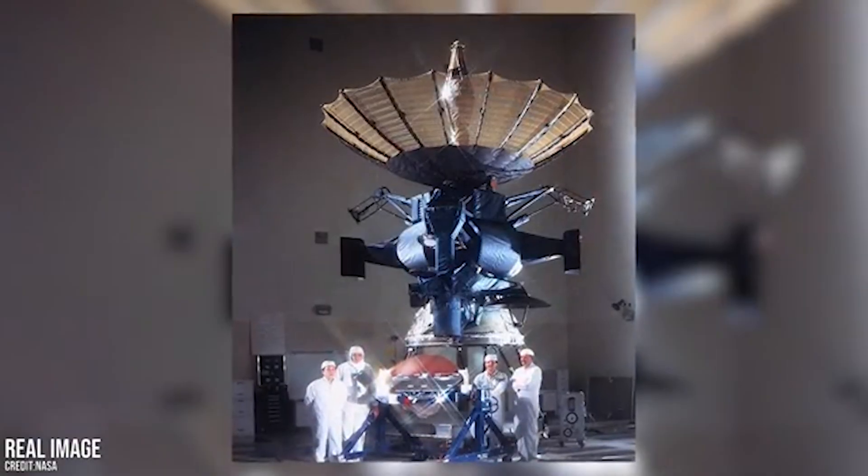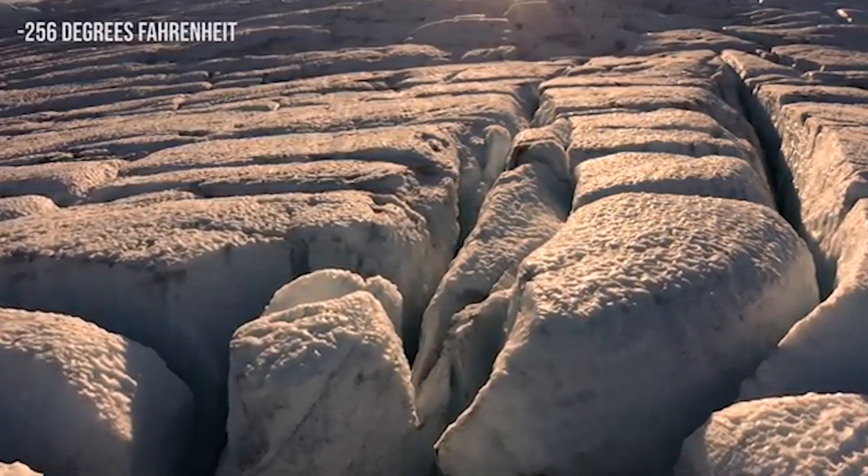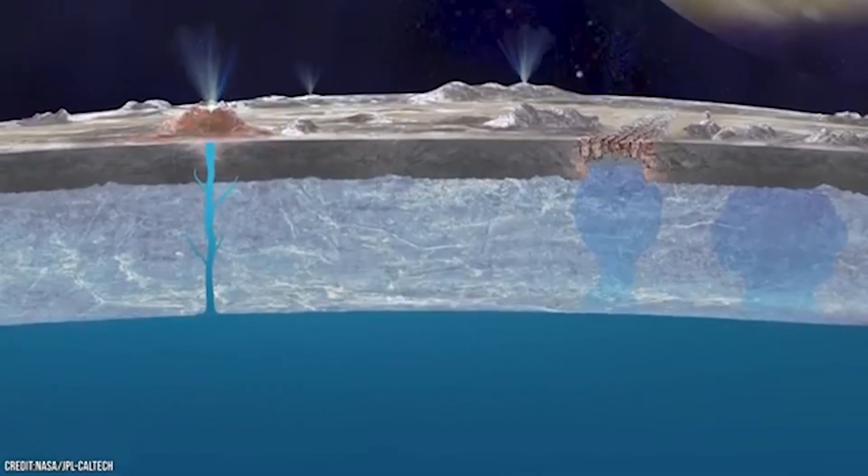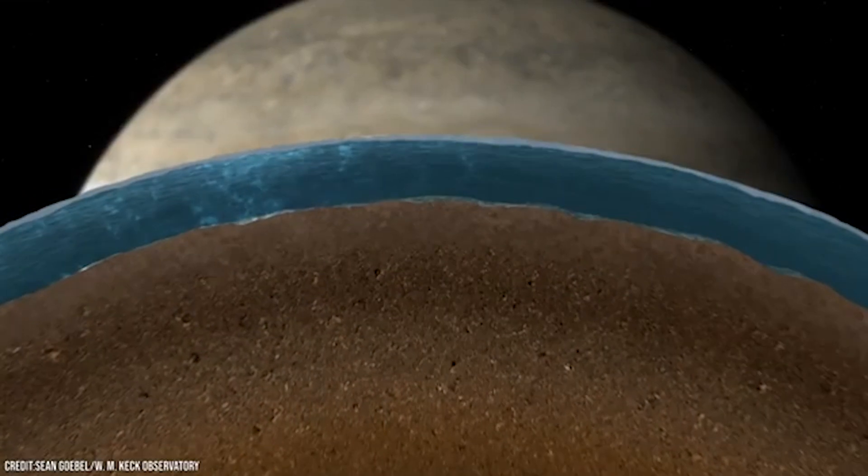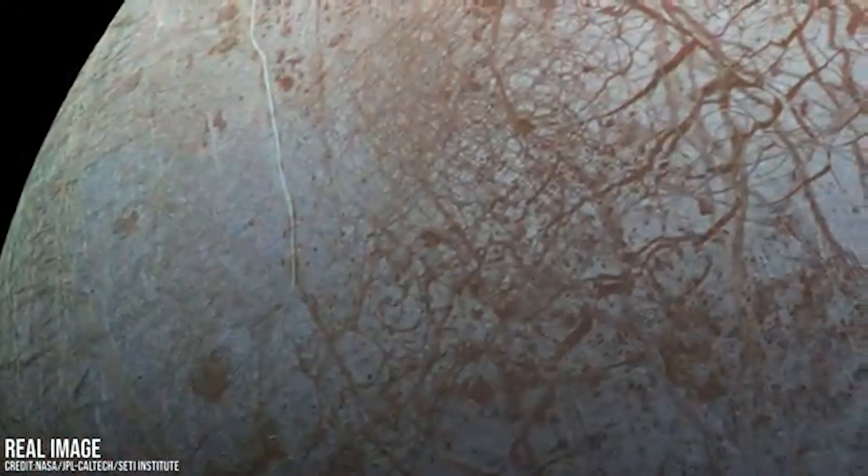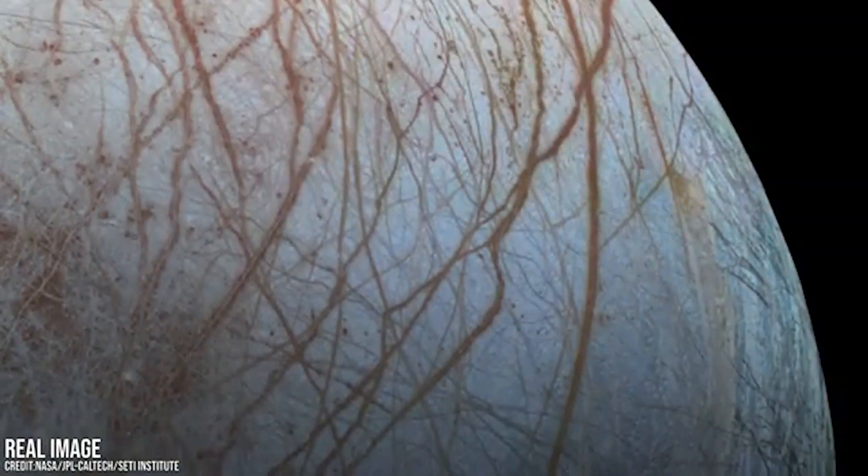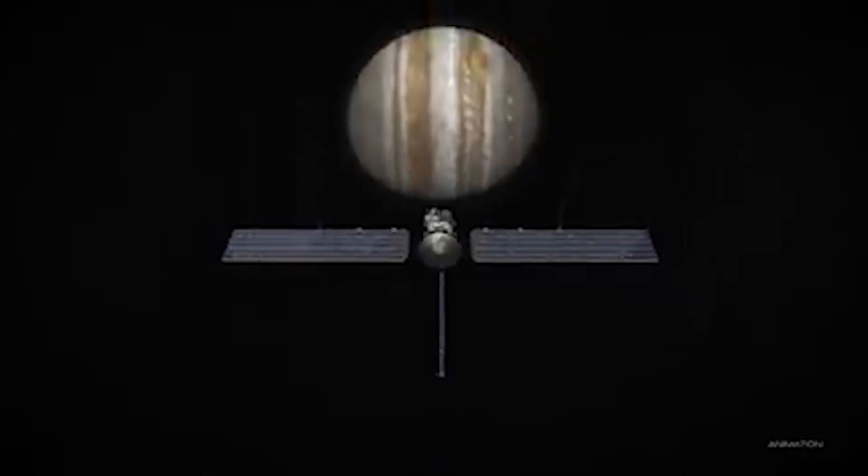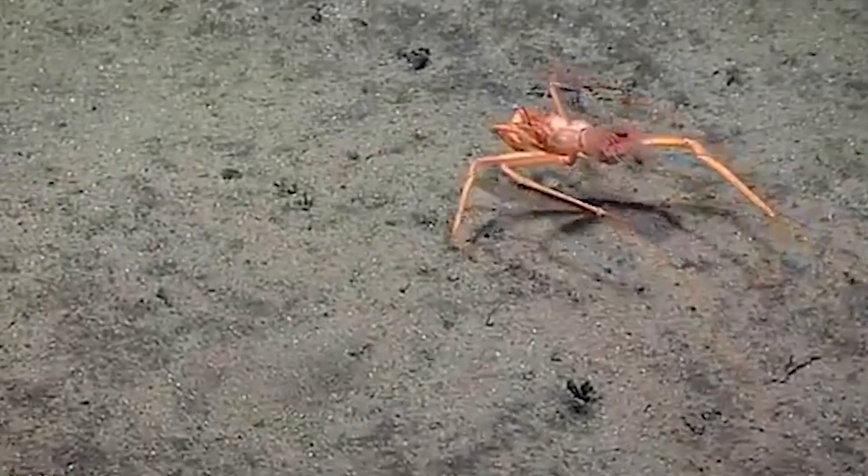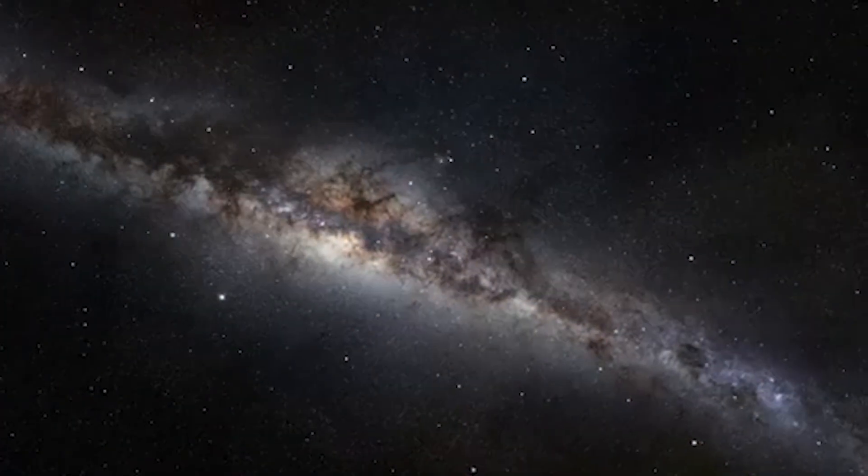Scientists are particularly excited about finding chaos terrain on this moon. These would be areas where the ice might be thin or recently broken, potentially allowing water to reach the surface. It might be where we find the first signs of life in our solar system beyond our home planet. If Europa Clipper finds even the tiniest hint of life, it could change everything we know about where life can exist in our universe. Just imagine lifeforms swimming in an alien ocean, under a world of ice. Wouldn't that be something?